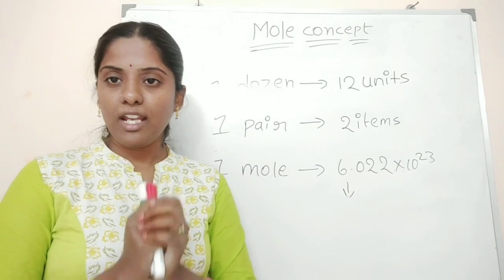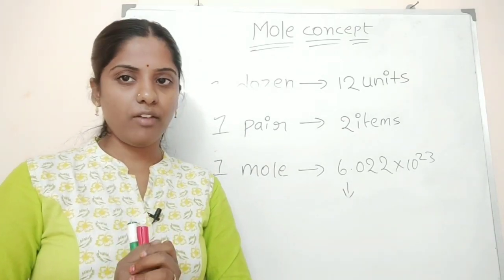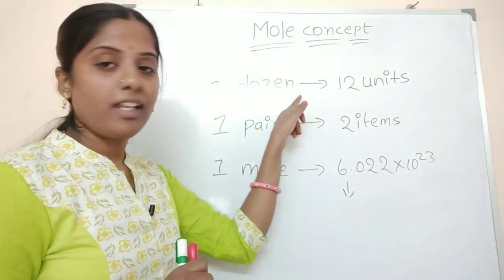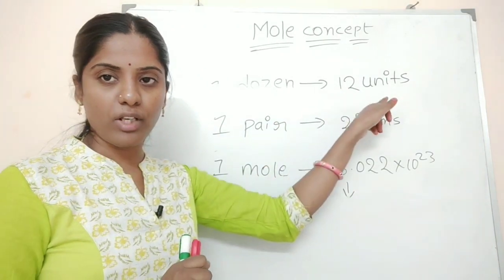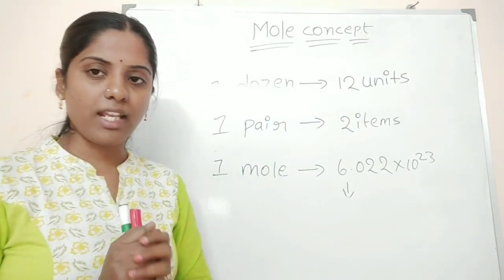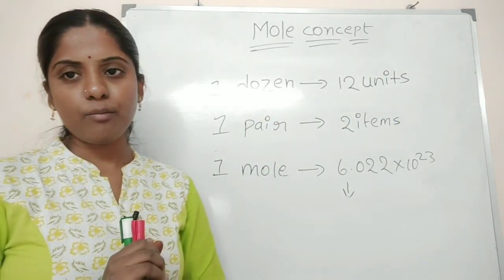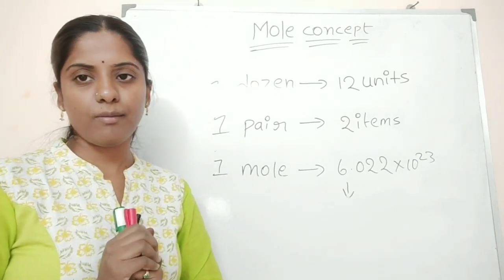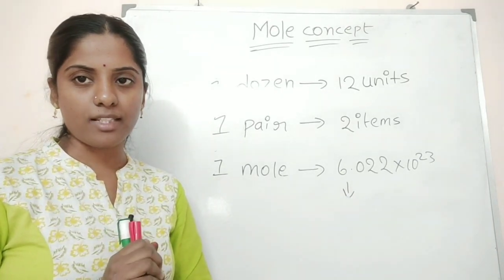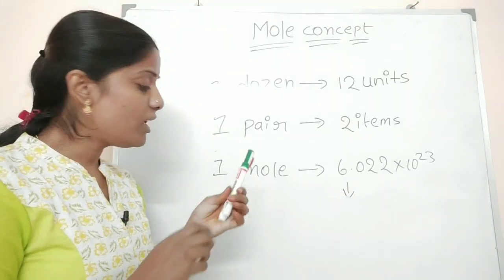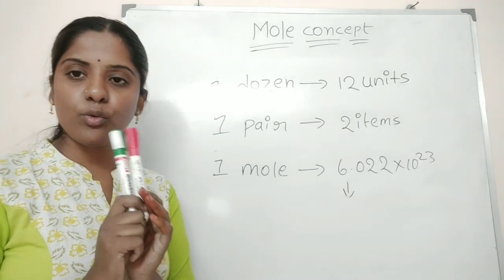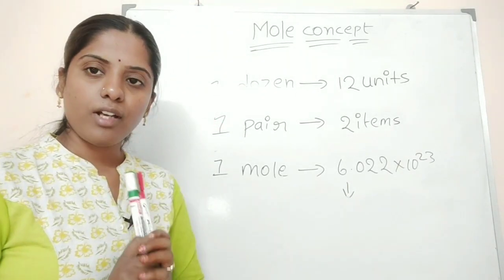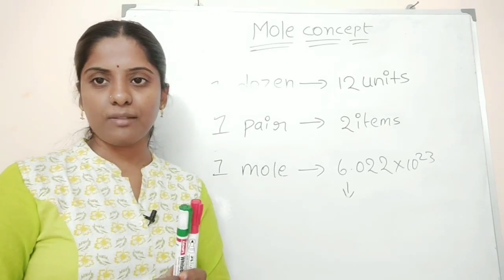Mole concept is based on the first part. One dozen is 12 units — if a shopkeeper has one dozen bananas, that means 12 bananas. Suppose you have two pens, you have to call that one pair. 100 runs is one century.